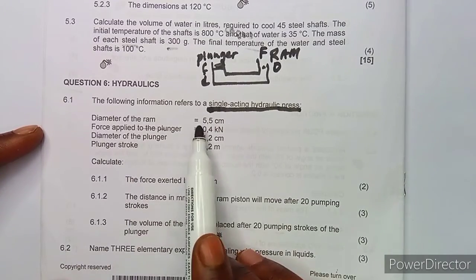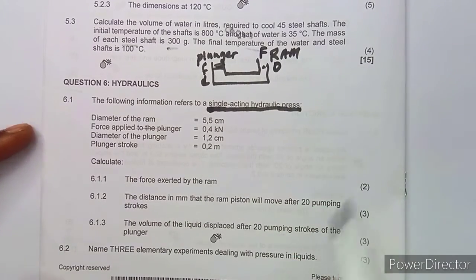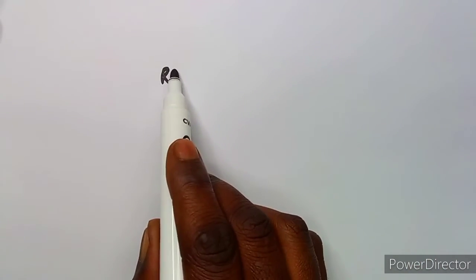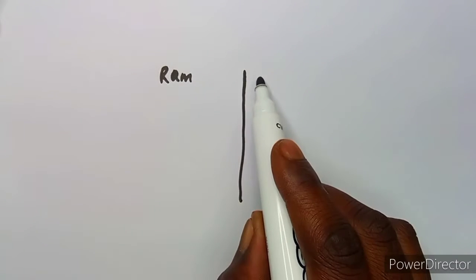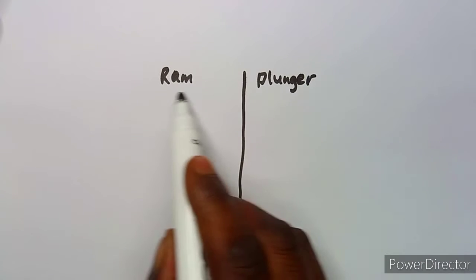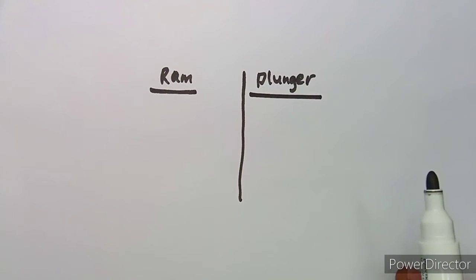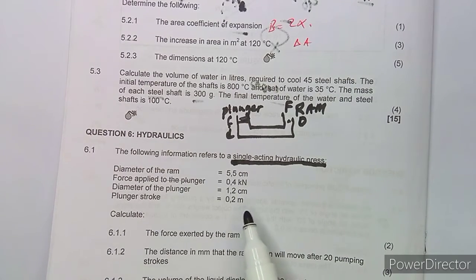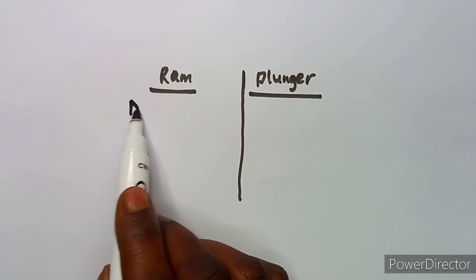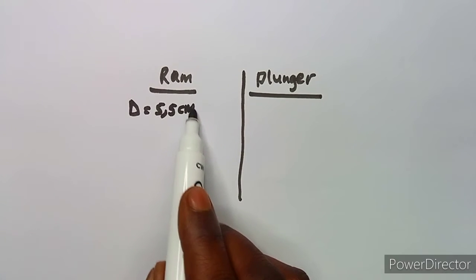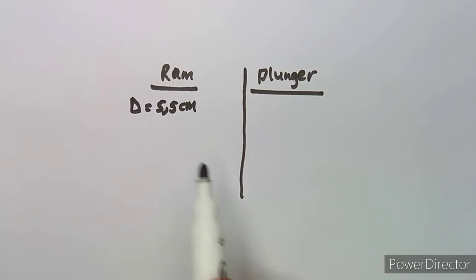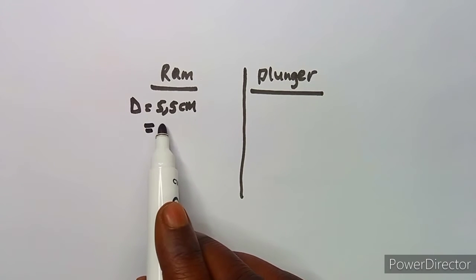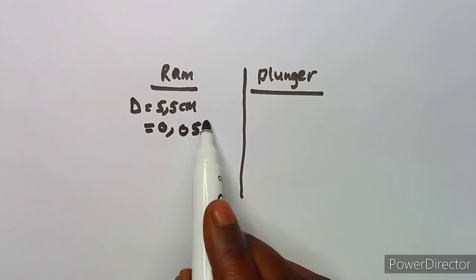We are given the diameter of the ram which is 55 centimeters. I always use capital letters for the ram and small letters for the plunger — that will help you a lot. So the diameter D is 55 centimeters, but we know the diameter is supposed to be in meters. To convert to meters you divide by 100, which gives you 0.055 meters.